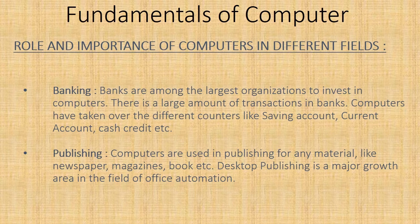Publishing — computers are used in publishing for any material like newspapers, magazines, books, etc. Desktop publishing, called DTP, is a major growth area in the field of office automation. By DTP we mean the process of producing any published material in an office environment, from the creation of the text through to page layout and design, and the production of print-ready copy with artwork.